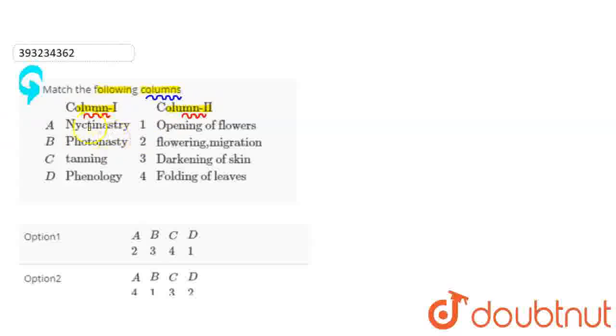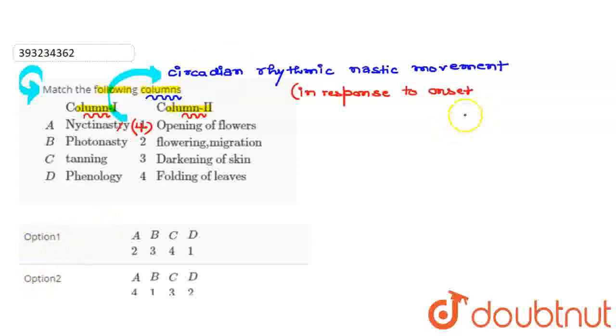Firstly, Column 1 में हमें दिया गया है nyctisnasty. तो nyctisnasty को हम यहाँ पे match करेंगे with folding of leaves. यह हमें fourth यहाँ पे दिया गया है. Nyctisnasty के concern में थोड़ा discuss करेंगे. यह हमारी circadian rhythmic nastic movements होती हैं higher plants में, which is in response to the onset of darkness. अब यहाँ पे हम इसे match कर रहे हैं fourth से, वो इसलिए because जब nightly nesty movements होती हैं, तो plants अपने leaves को close कर लेते हैं during the night और morning में यह अपने leaves को open कर देते हैं.